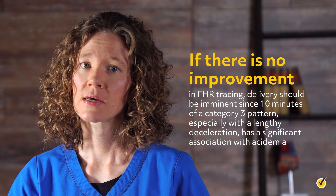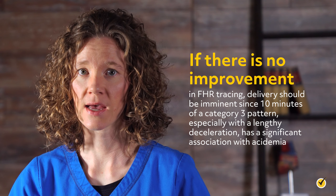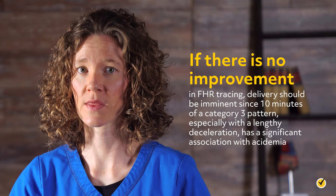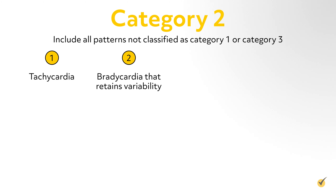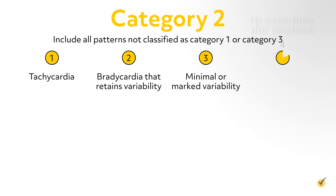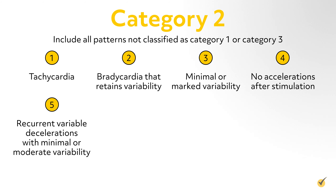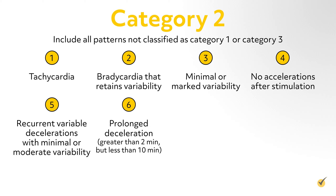To set standards for a clearer fetal heart rate interpretation, a three-tier system for categorizing intrapartum EFM has been established. A Category 1 fetal heart rate pattern is defined as having a baseline rate of 110 to 160 beats per minute, moderate variability, no late or variable decelerations, early decelerations present or absent, and accelerations present or absent. Category 1 patterns are considered normal and no intervention is necessary.